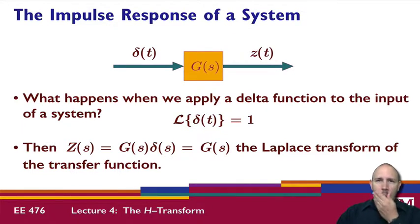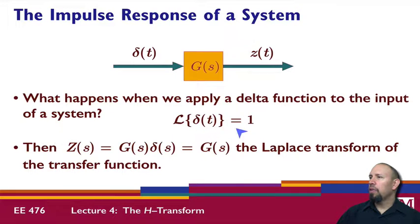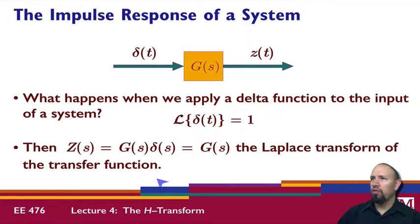To do that, we're going to use the concept of the impulse response of a system. If we apply an impulse to a continuous-time system, we recall that the Laplace transform of the delta function is just one. So when we apply a delta function, we get Z of S equal to G of S times delta of S, which is just G of S — the Laplace transform of the transfer function. This is one way of obtaining a transfer function.